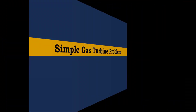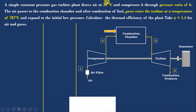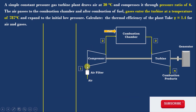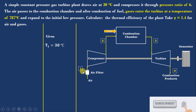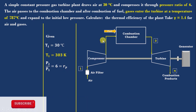Now let's start the problem. A simple constant pressure gas turbine plant draws air at 30°C, that is T1 = 30°C. Convert it to kelvin by adding 273, so T1 = 303 K. It is compressed through a pressure ratio of 6, that is RP = P2/P1 = 6.